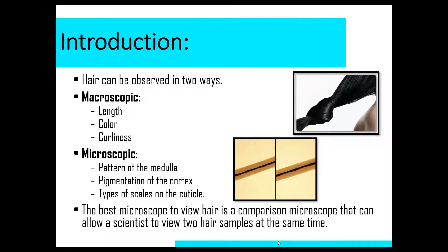So hair can be observed either macroscopically, which is with the naked eye. These are things that we can notice about a hair sample without the aid of a microscope. So things like length, color, curliness, and texture—those are all macroscopic properties.